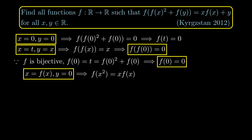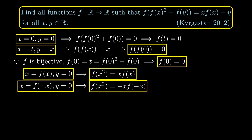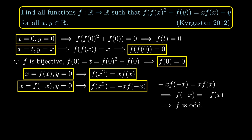Setting x = f(x) and y = 0 and using f(f(x)) = x simplifies to f(x²) = x·f(x). Similarly, setting x = f(-x) and y = 0 gives f(x²) = -x·f(-x). Comparing these two equations, -x·f(-x) = x·f(x), so dividing by x we get f(-x) = -f(x), which means f is an odd function. When x = 0, this is already satisfied since f(0) = 0.